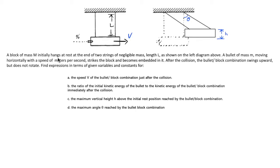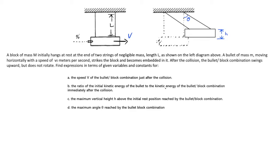We find that a block of mass M initially hangs at rest at the end of two strings of negligible mass, length L, as shown on the left diagram. A bullet of mass m moving horizontally with a speed of v-naught strikes the block and becomes embedded in it. After the collision, the bullet-block combination swings upward but does not rotate. We need to find expressions for: (A) the speed V of the bullet-block combination just after the collision, (B) the ratio of the initial kinetic energy of the bullet to the kinetic energy of the bullet-block combination immediately after the collision, (C) the maximum vertical height h, and (D) the maximum angle theta.